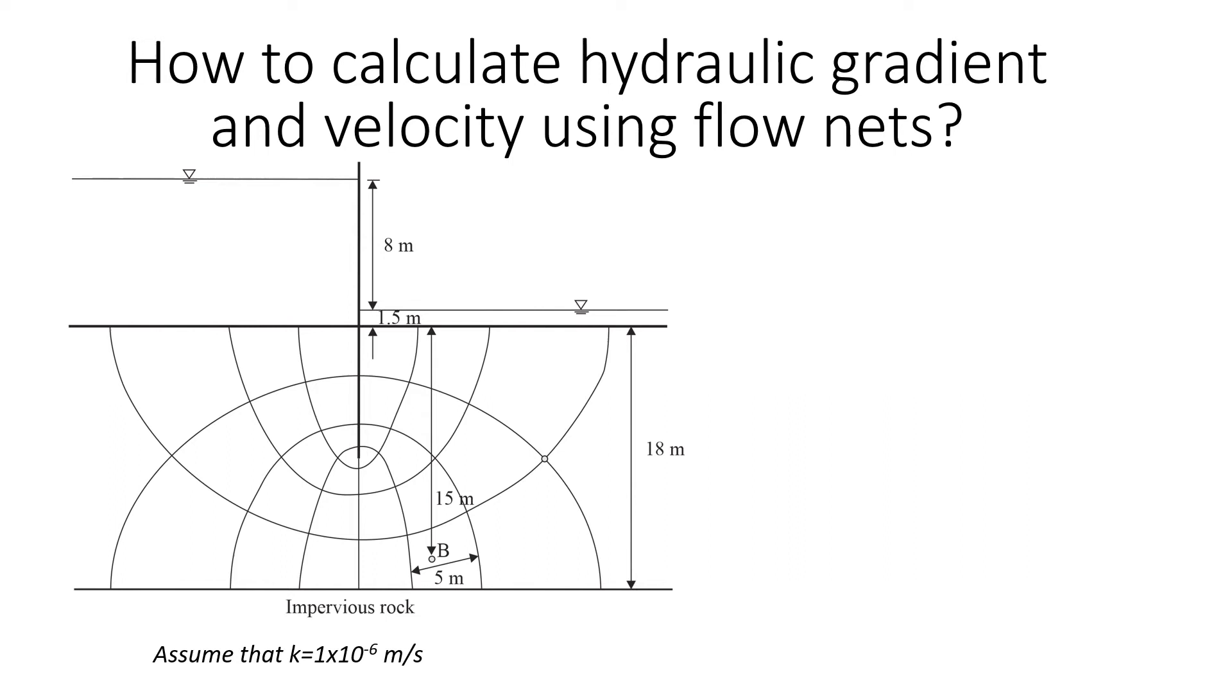This video will explain how to calculate hydraulic gradient and velocity of water flow using flow nets. Let's look at this example. We have two different water levels, one on the left is higher than one on the right, and we have water seepage underneath these sheet piles. There is a point B somewhere here, and we need to calculate hydraulic gradient at point B and the velocity of flow at point B.